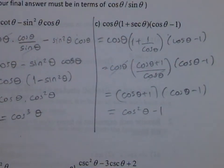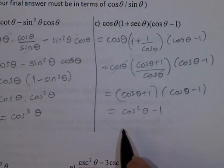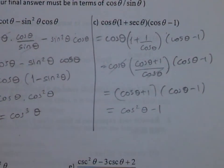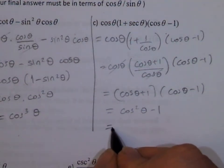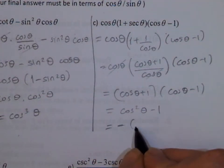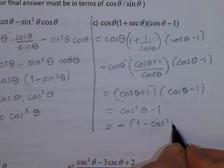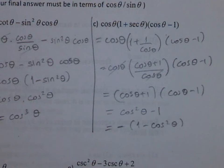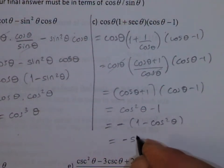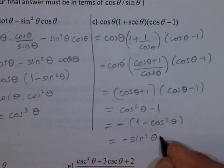We can simplify even further. If it were 1 minus cosine squared theta you'd write it as sine squared theta, but this is cosine squared theta minus 1. You can factor out a negative, giving 1 minus cosine squared theta, and you get negative sine squared theta.